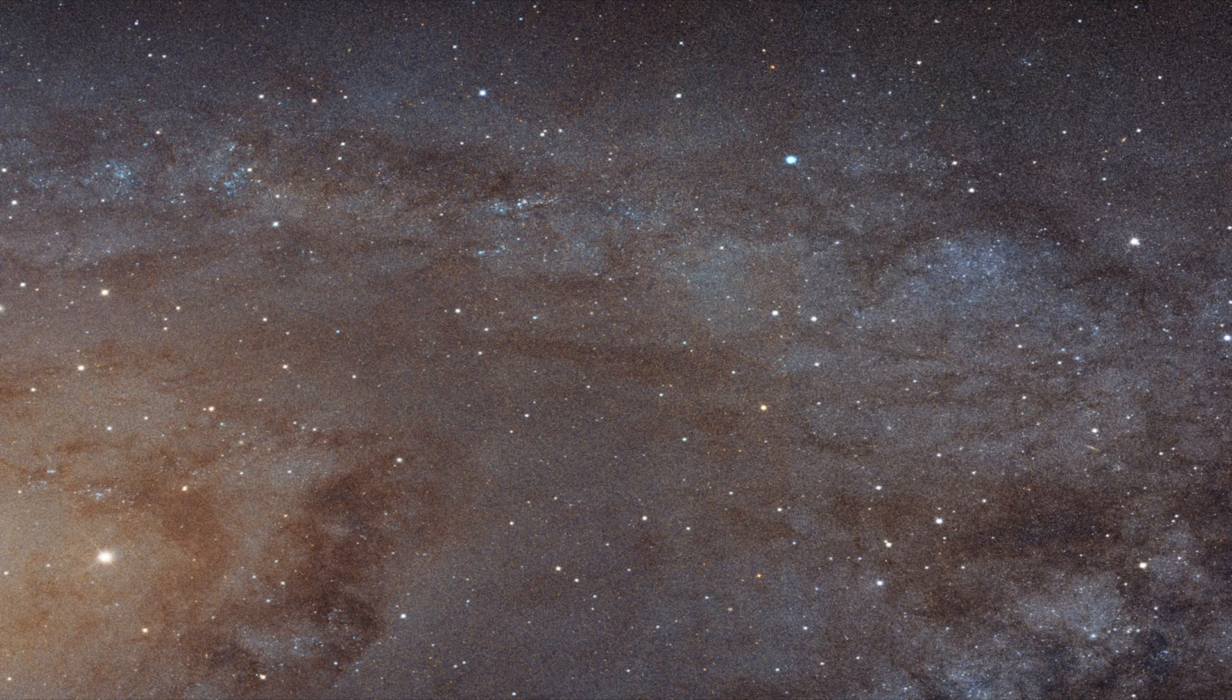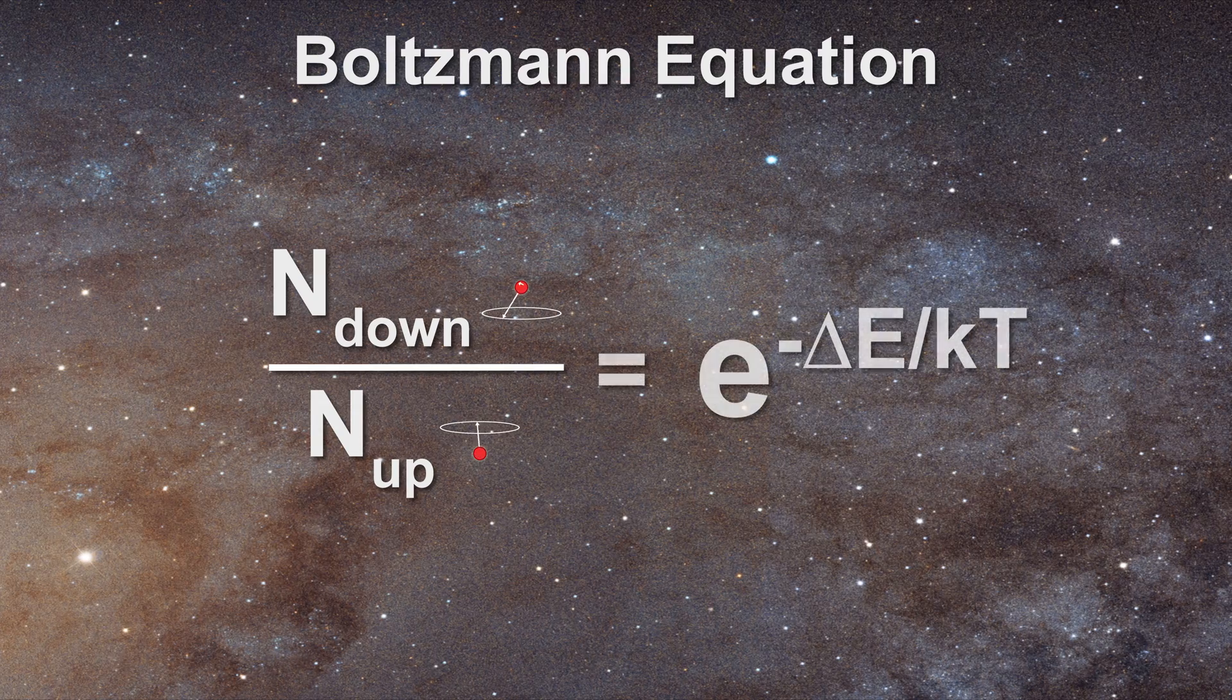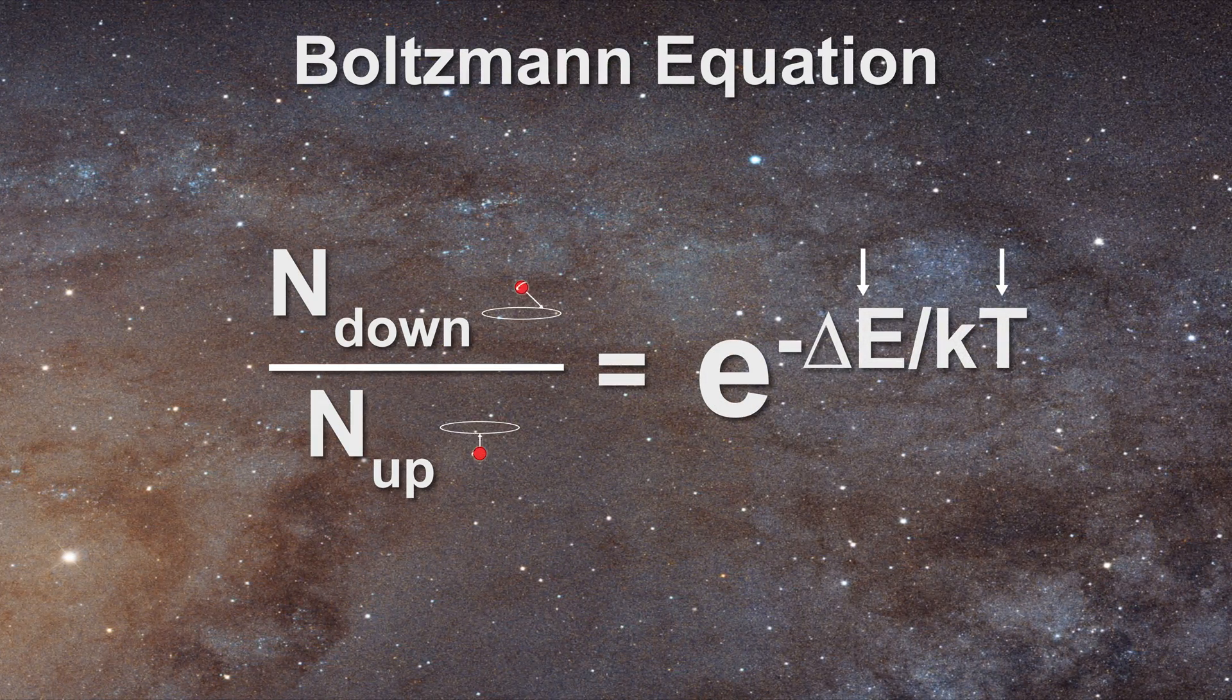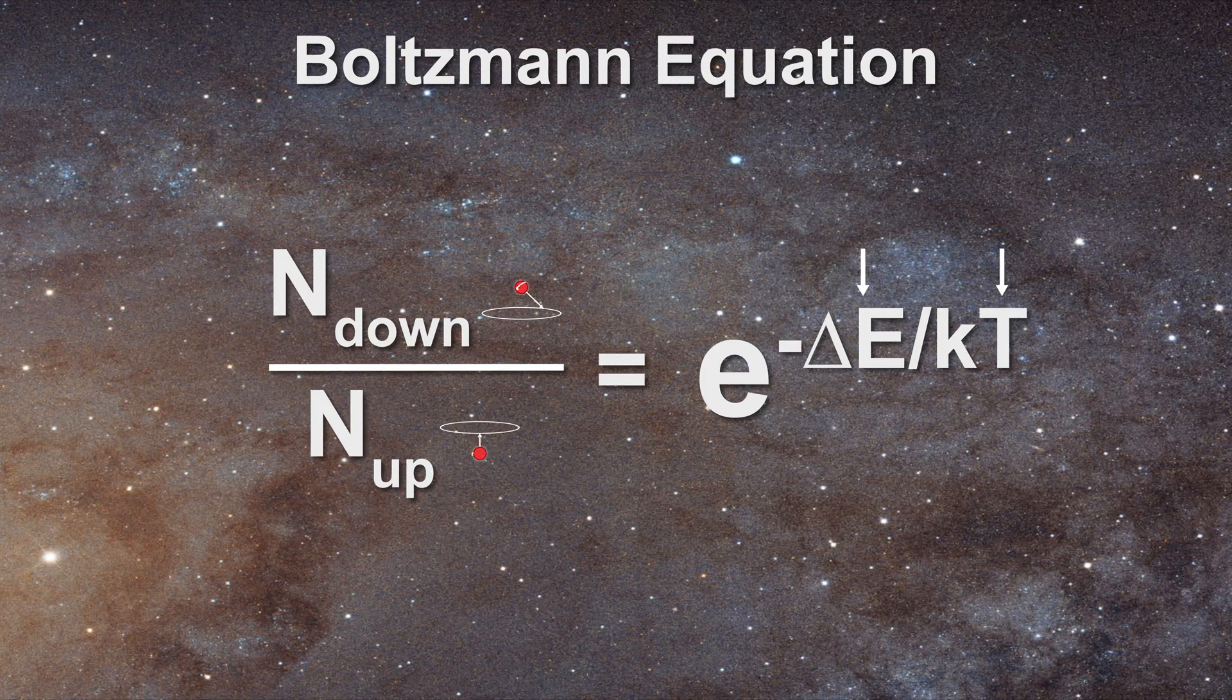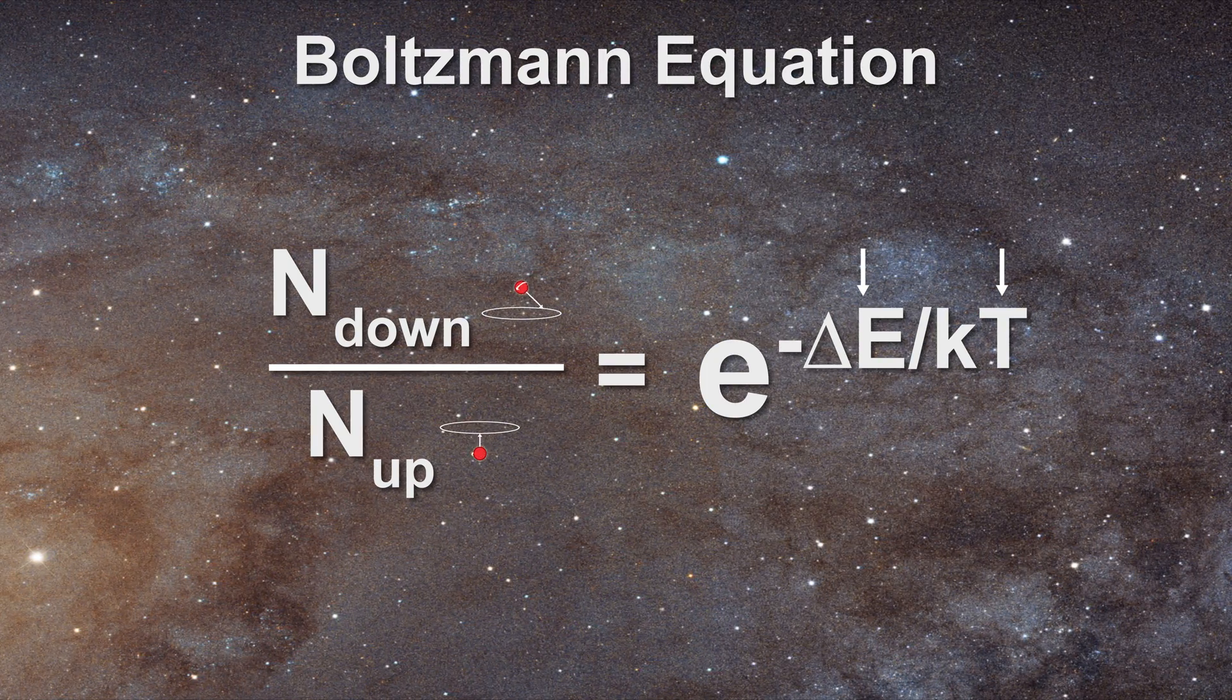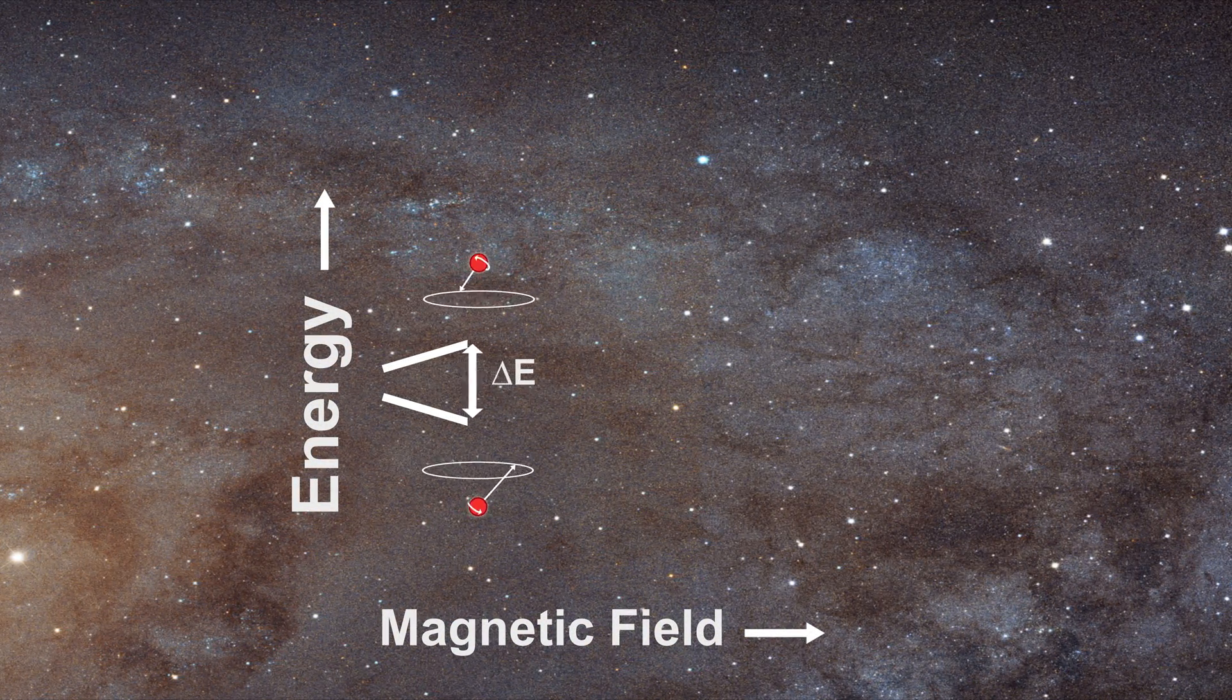The amount of protons in the upper or the lower energy state is given by what is known as the Boltzmann equation. It depends solely on temperature and the energy separation between the energy levels known as delta E. The energy separation between spin up and spin down energy depends only on the type of nuclei we are studying and on the strength of the external magnetic field. Delta E becomes greater with stronger magnetic fields.